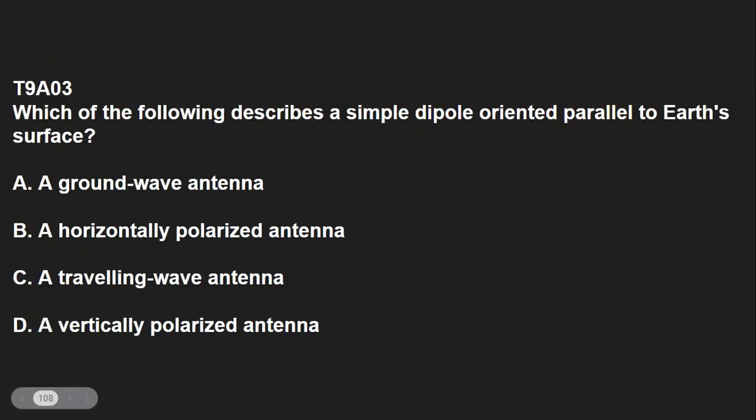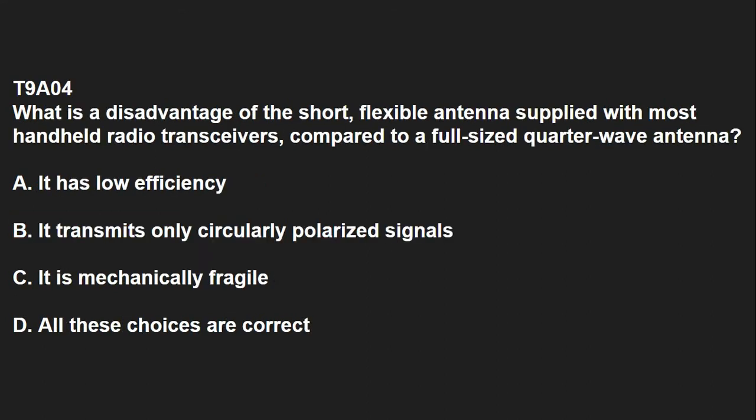T9A03: Which of the following describes a simple dipole oriented parallel to the Earth's surface? That is a horizontally polarized antenna. T9A04: What is a disadvantage of the short, flexible antenna supplied with most handheld transceivers — sometimes called a rubber duck — compared to a full-sized quarter-wave antenna? The antenna has low efficiency.